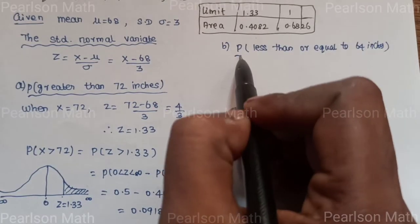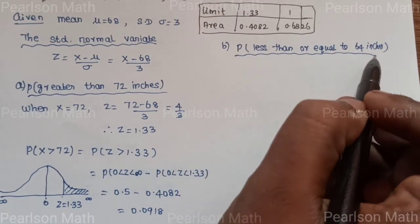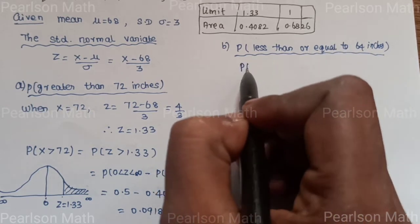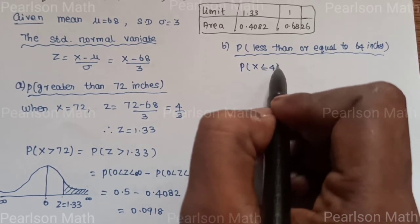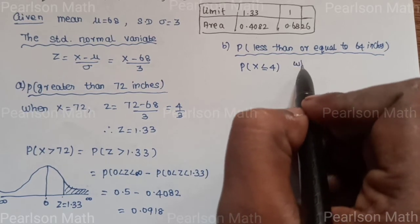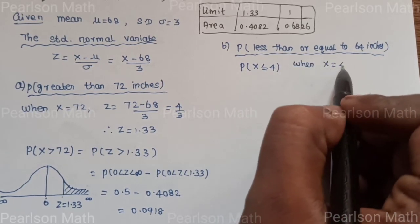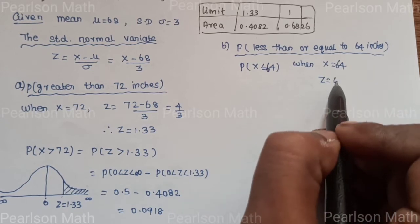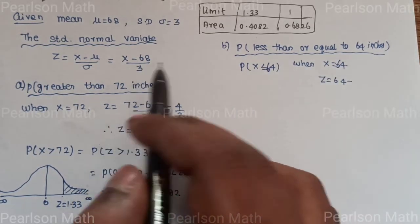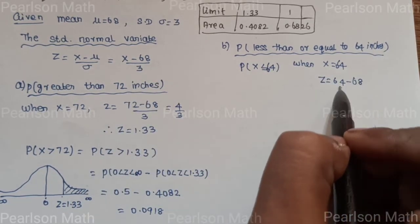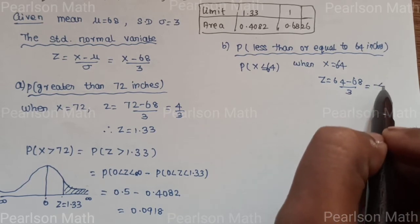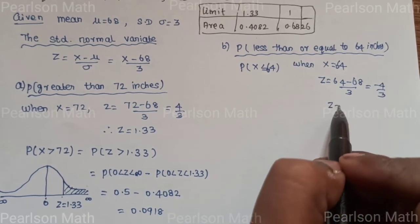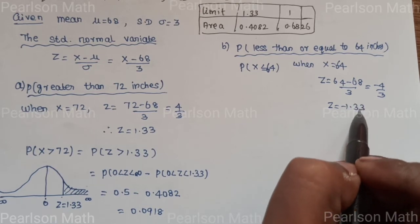Second subdivision: P(X ≤ 64). When X = 64, Z = (64 − 68) / 3 = −4/3 ≈ −1.33.